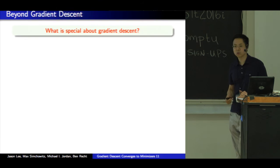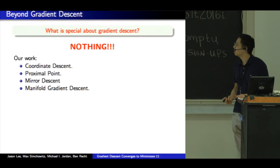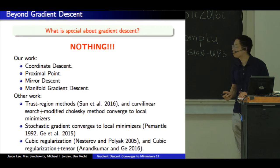So the next question is, you might be wondering what's special about gradient descent? Is there some reason that it converges to minimizers as opposed to saddles? And there's really nothing special. For most algorithms, you can check that a saddle point of a function is an unstable equilibria of the corresponding dynamical system corresponding to these algorithms. Coordinate descent, proximal point, mirror descent, gradient descent on manifolds, and so forth.